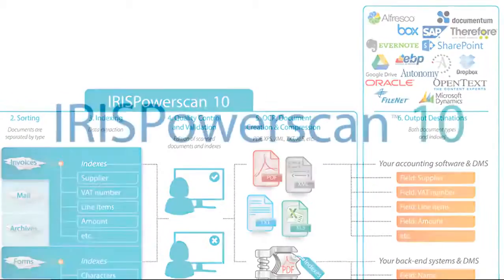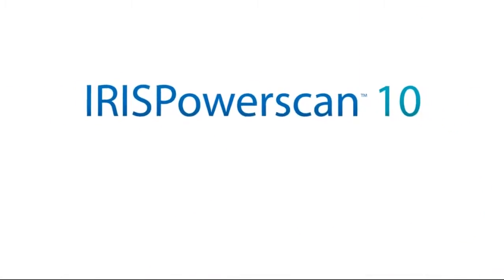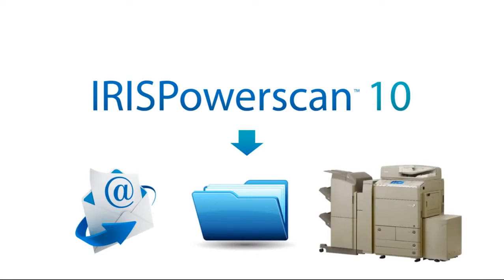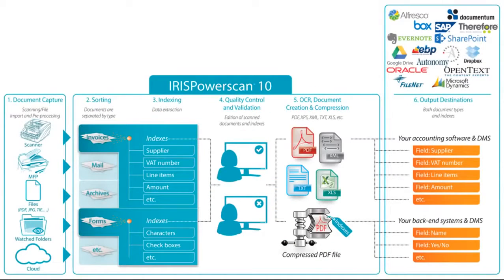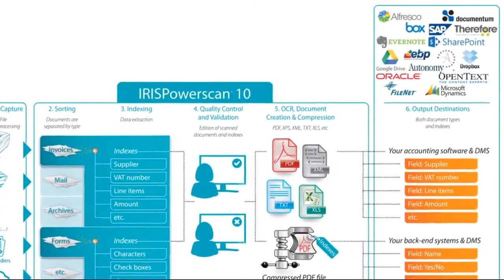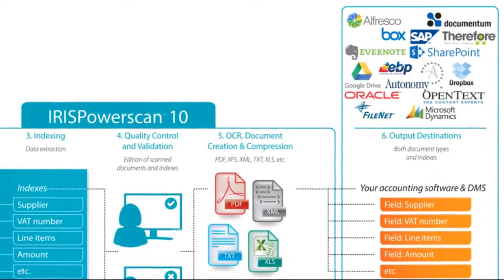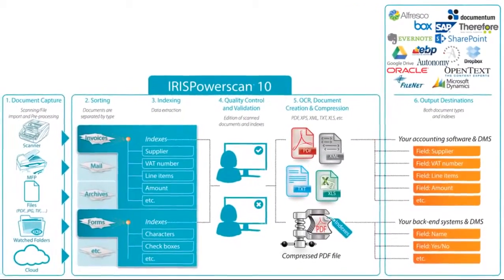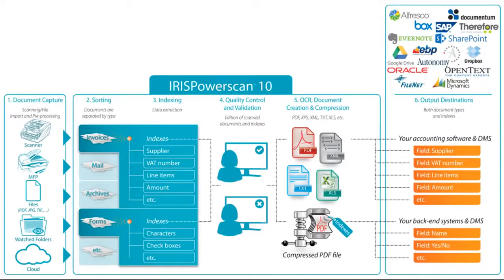Output destinations. Iris PowerScan 10 is able to export documents and index data to virtually any destination: email, folders or printers. Optional connectors are also available for third-party applications such as Alfresco, Documentum, SharePoint, FileNet, Autonomy Worksite, OpenText, and cloud repositories such as Box, Dropbox, Google Docs, Evernote, or any other system thanks to specially customized connectors — for instance for EBP, SAP, Microsoft Dynamics, and Oracle Financials, to name but a few.